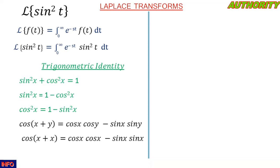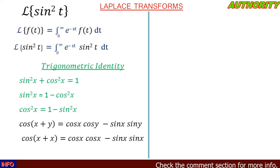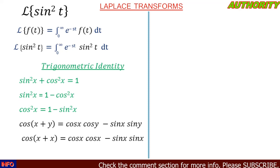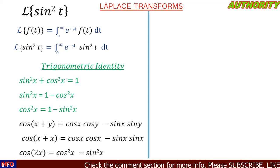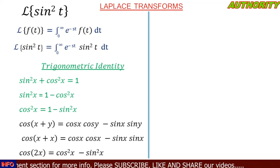Now if we set y = x, then cos(x + x) = cos x cos x − sin x sin x, which gives cos²x − sin²x. And cos(x + x) is the same as cos 2x, so cos 2x = cos²x − sin²x.